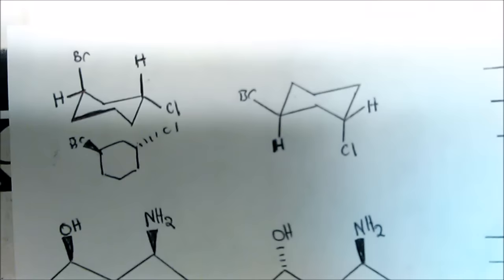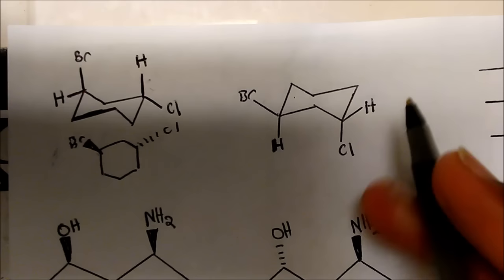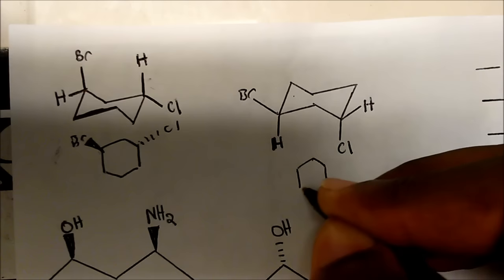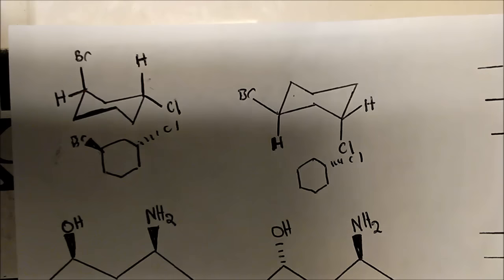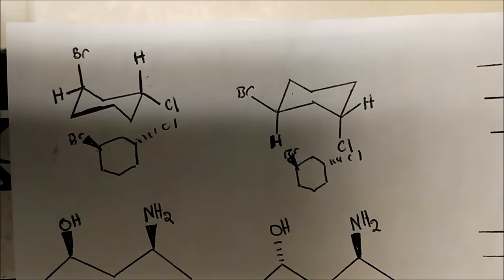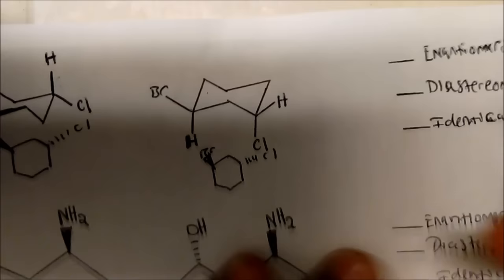Now looking at this second chair conformation — it looks different, but let's see. On carbon one, we have the chlorine still going down. Carbon one, two, three, four, five — we have the bromine going up. On carbon five, the bromine is going up. As you can see, these are the same molecules — literally the same thing. These are just the chair conformations flipped. So these are identical.